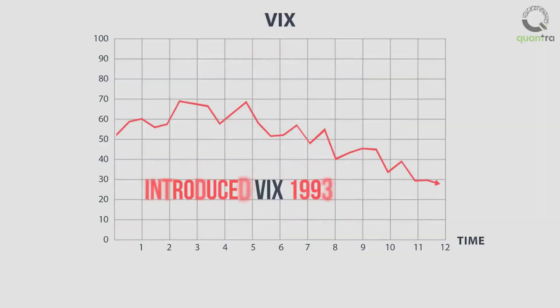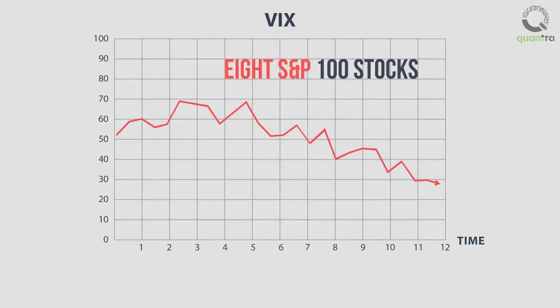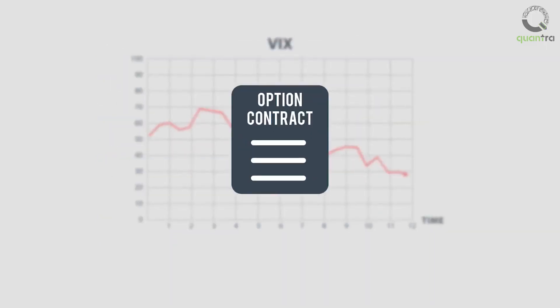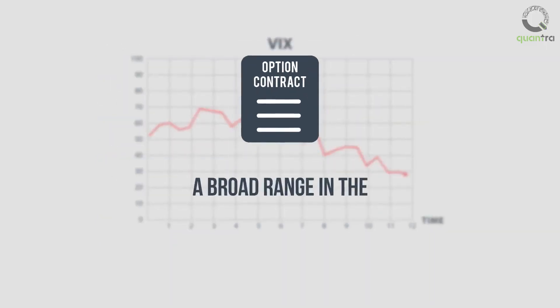VIX was introduced in 1993. It was originally a weighted measure of the eight S&P 100 stocks. Later, it expanded and options were taken from a broad range in the S&P 500 index.